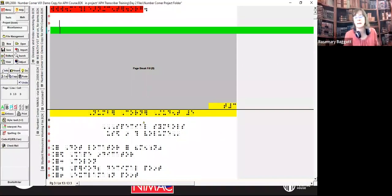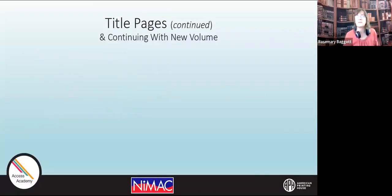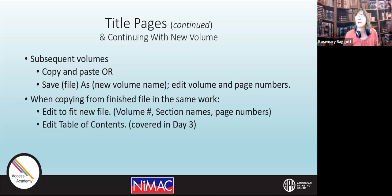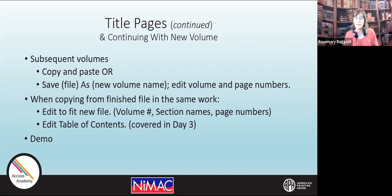That's the other demo I wanted to show you quickly related to title pages. When it gets to my second volume and subsequent volumes, rather than go through that whole process, I save the volume — let's say I save it as volume one; I have all my NIMAS information there. Then I'll save as volume two, save as the new volume, and edit the volume and page numbers on the title page.